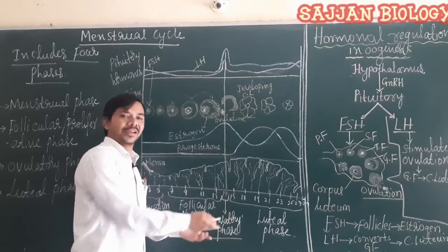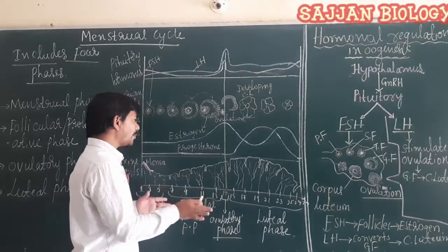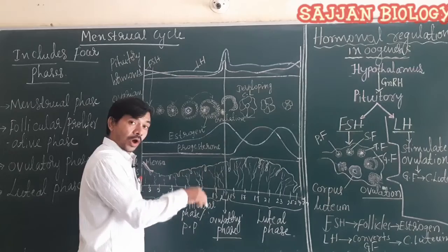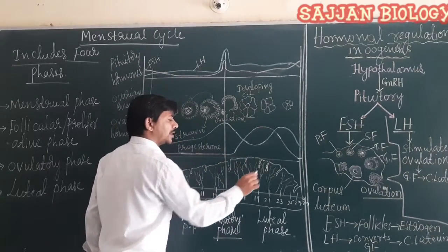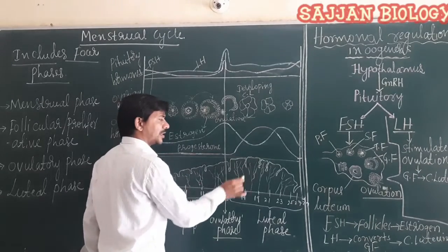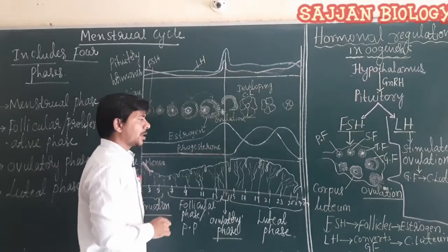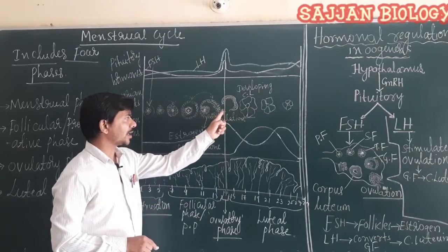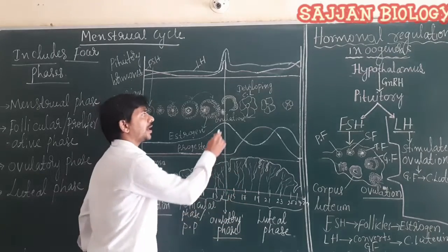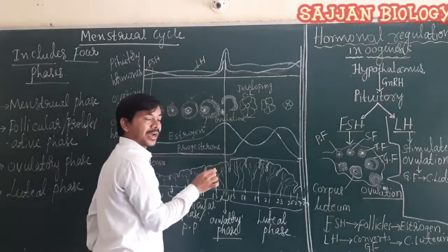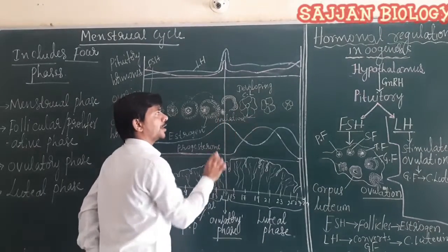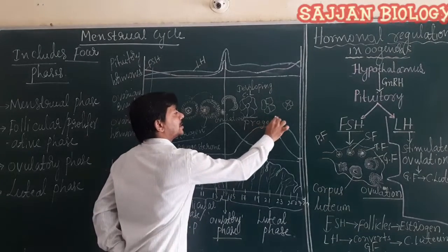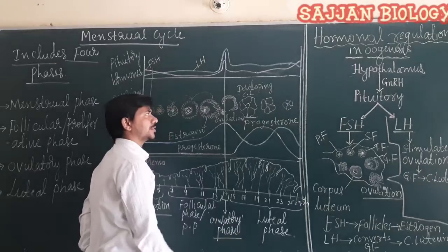During the luteal phase, the endometrium wall increases further in thickness up to 5 mm. After ovulation, the corpus luteum is stimulated and starts the secretion of progesterone hormone. This progesterone hormone promotes the development and proliferation of the endometrium wall, increasing its thickness. The empty Graafian follicle becomes a yellow-colored body called the corpus luteum, whose primary function is the secretion of progesterone.